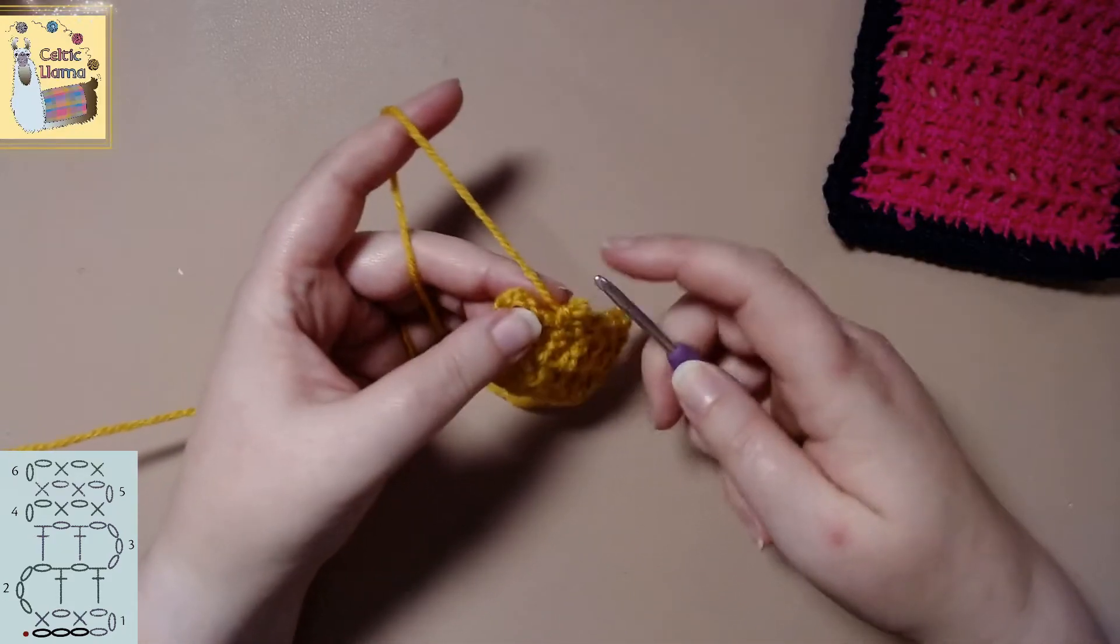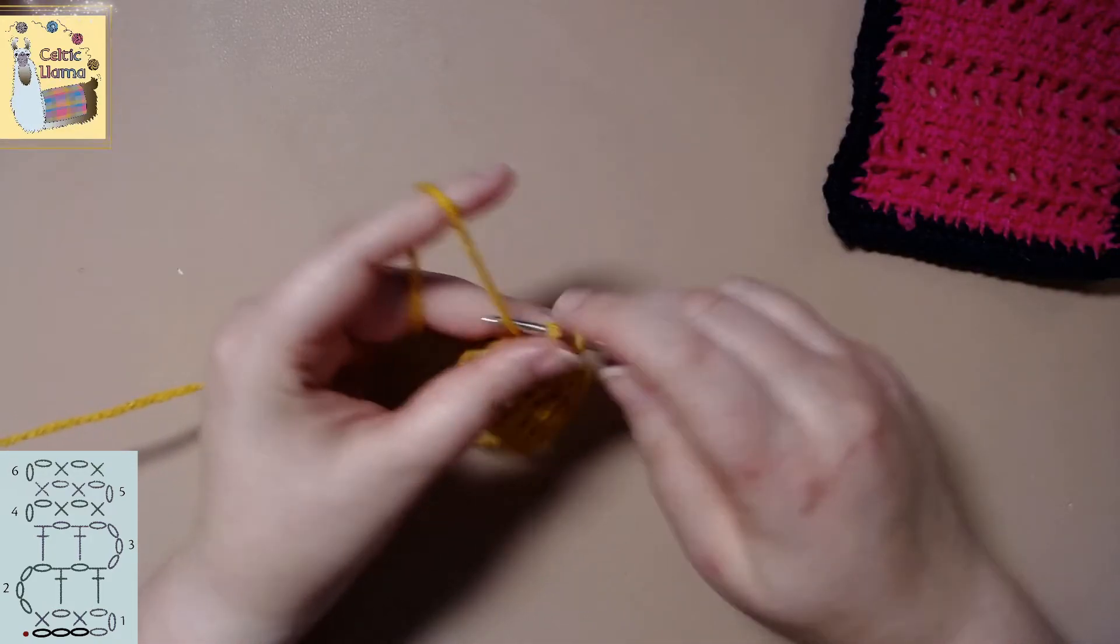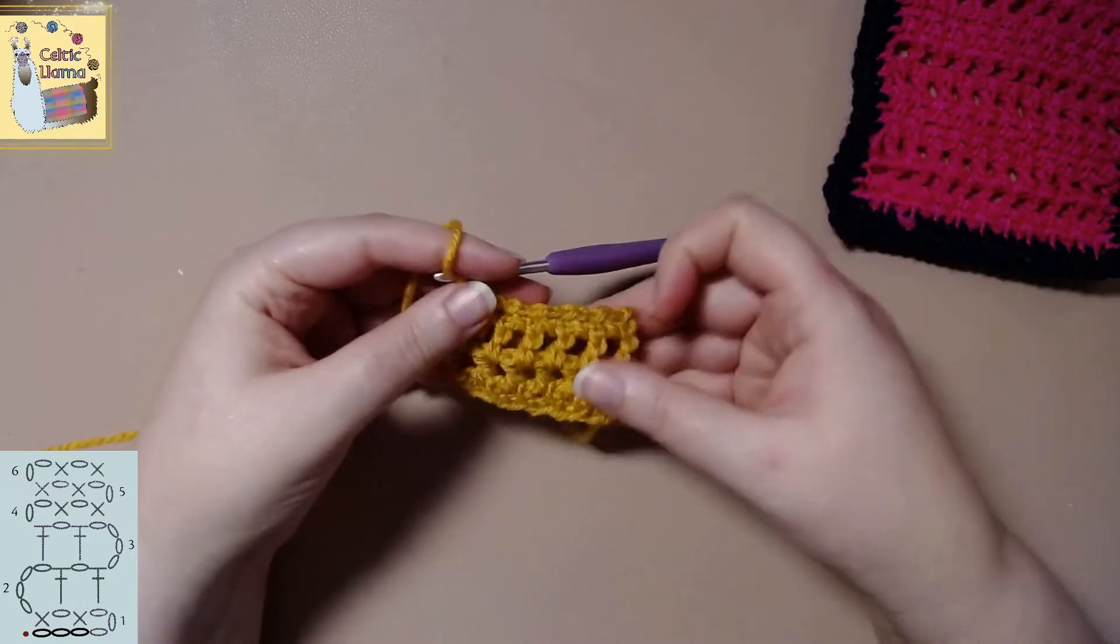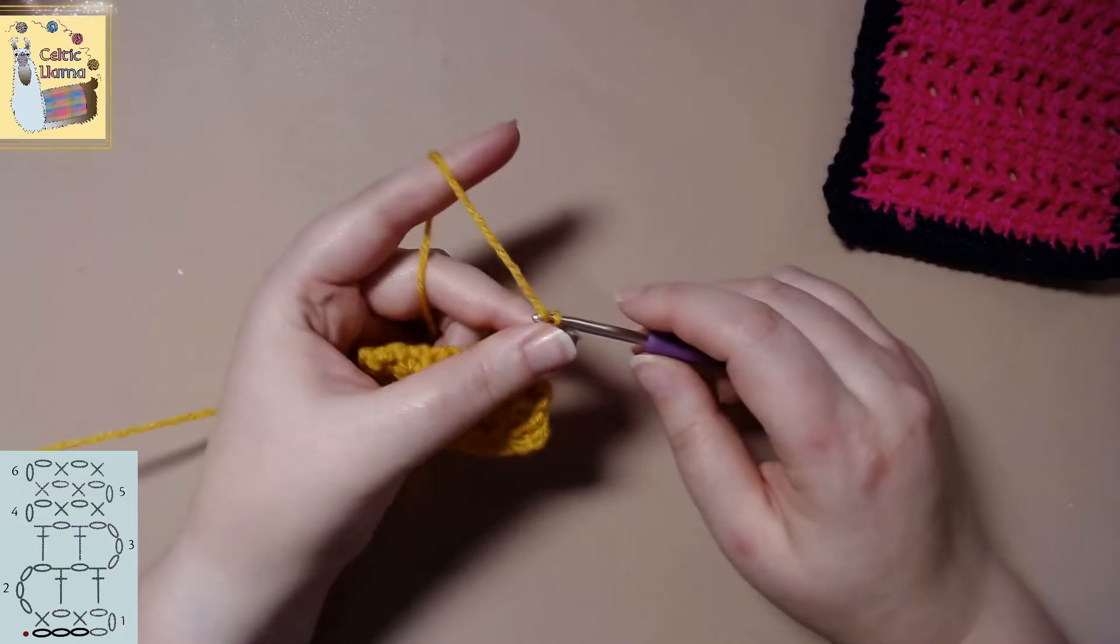Oops. Oops. That's okay. It happens. Just get a little too excited sometimes. So that's row four. So row five and six, we are repeating the same method.